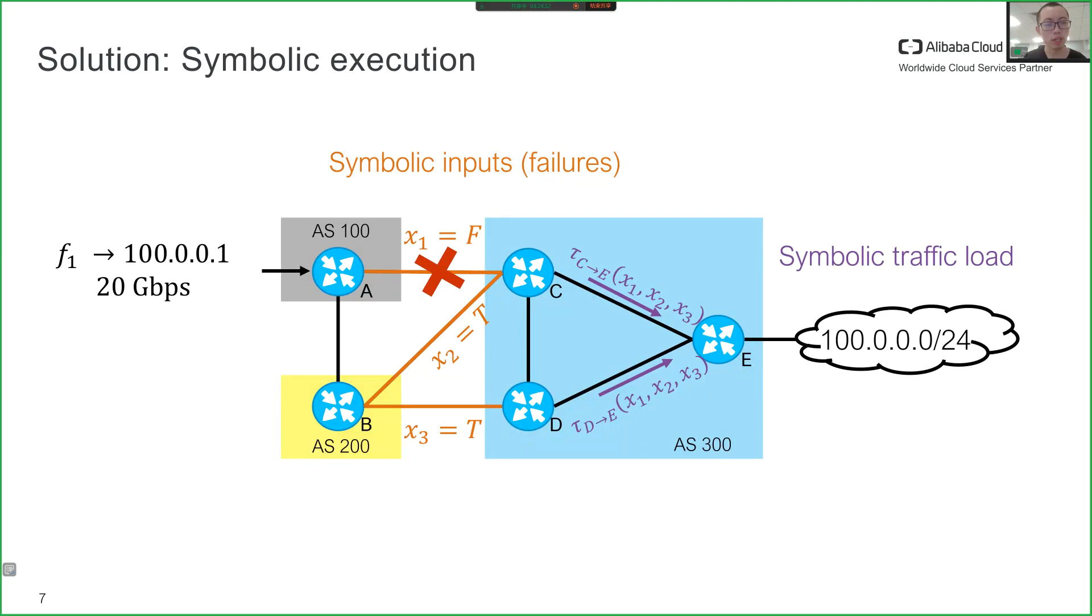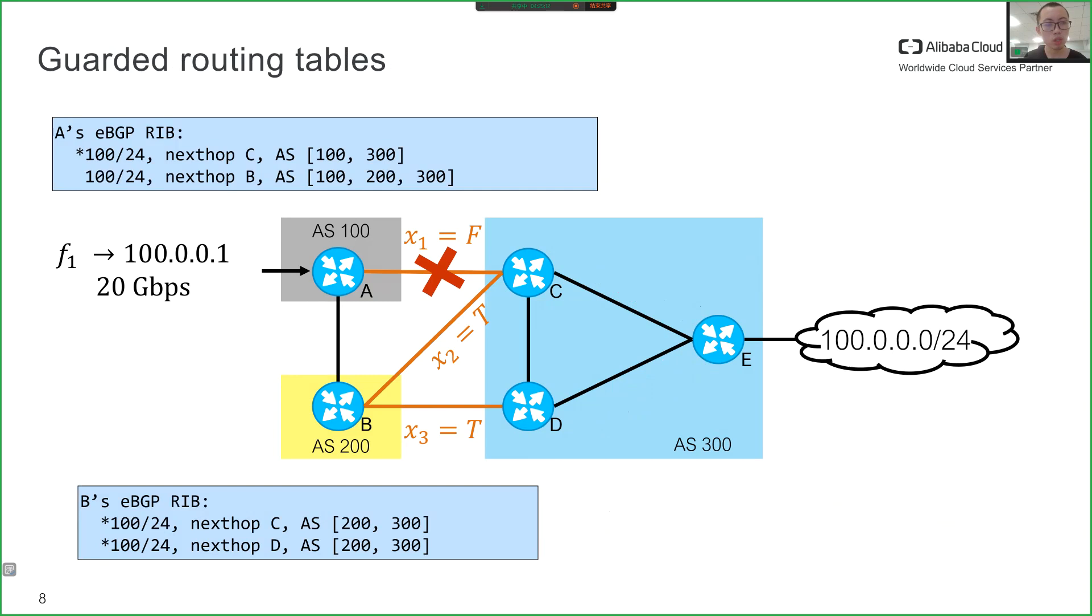We then use symbolic traffic execution to compute the symbolic traffic load for each link, which is a function that maps failure scenarios to the traffic load under that failure scenario. After that, we can verify whether any link would be overloaded under k failures by proving or disproving the formula related to the symbolic traffic load. To be general, symbolic traffic execution must reflect the exact forwarding behavior of the router. Thus, we need to start with symbolic representations of routing tables.